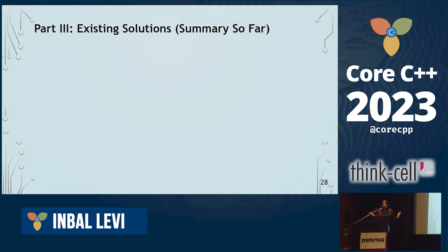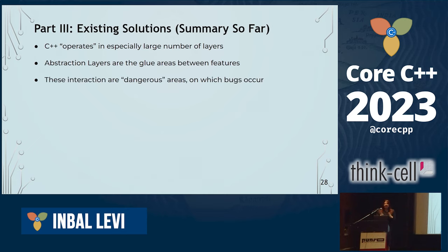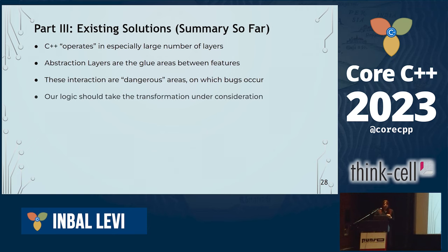To summarize: the problem here is that ranges takes ownership of the thing and we create a mismatch. C++ operates on large numbers of layers — that's exactly its key feature, and I think it's what makes this language very beautiful. But abstraction layers can not go well with each other, and there are dangerous areas when we try to move between different abstraction layers. I think these are the areas on which bugs occur.